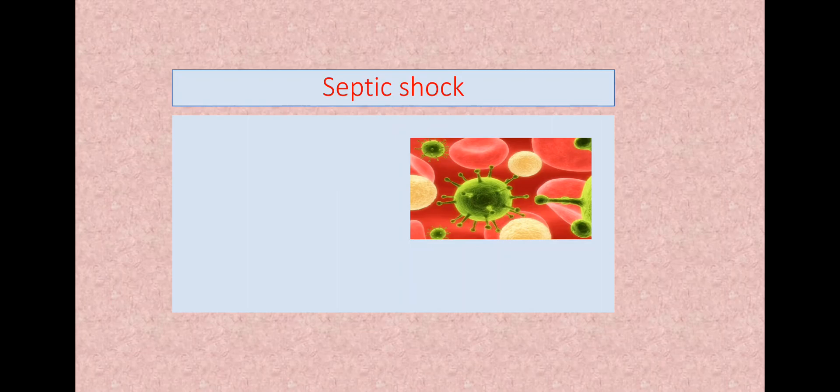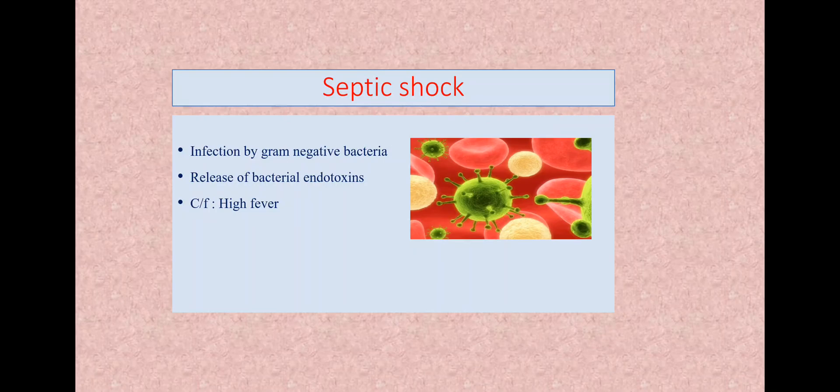So another type is septic shock. Distributive shock. One was neurogenic shock. Second is the septic shock. So in this, their microorganisms are their gram-negative microorganism that do not take up the gram stain: E. coli, Klebsiella, Pseudomonas, Shigella. So all these can cause widespread infection in the body and release of toxins will be there. Those toxins will produce marked vasodilatation. Vasodilatory substances will be released. And as there is infection, so clinically the patient will have high fever in case of septic shock.